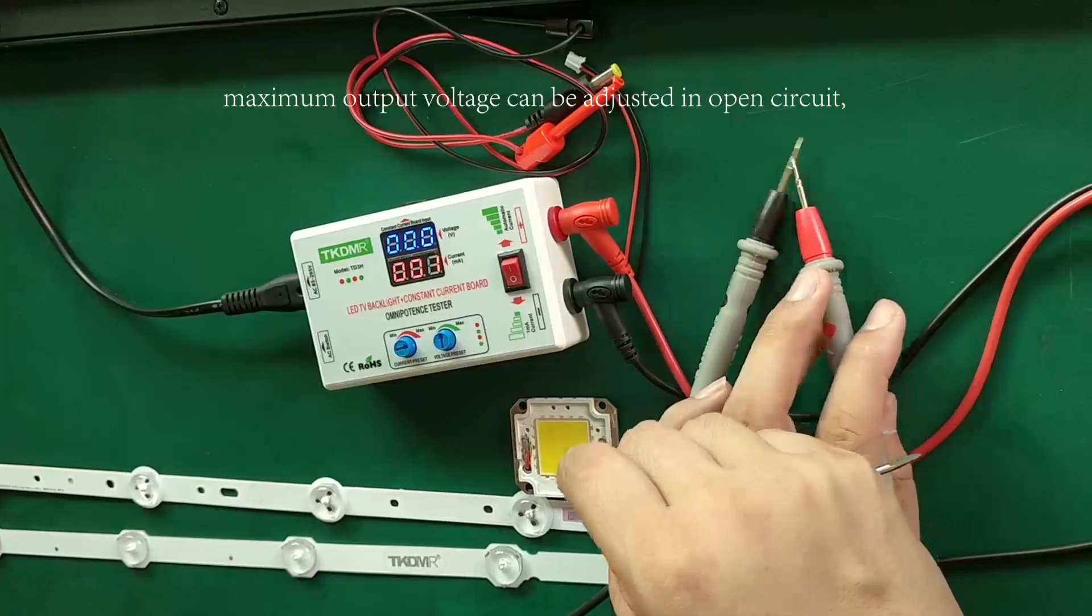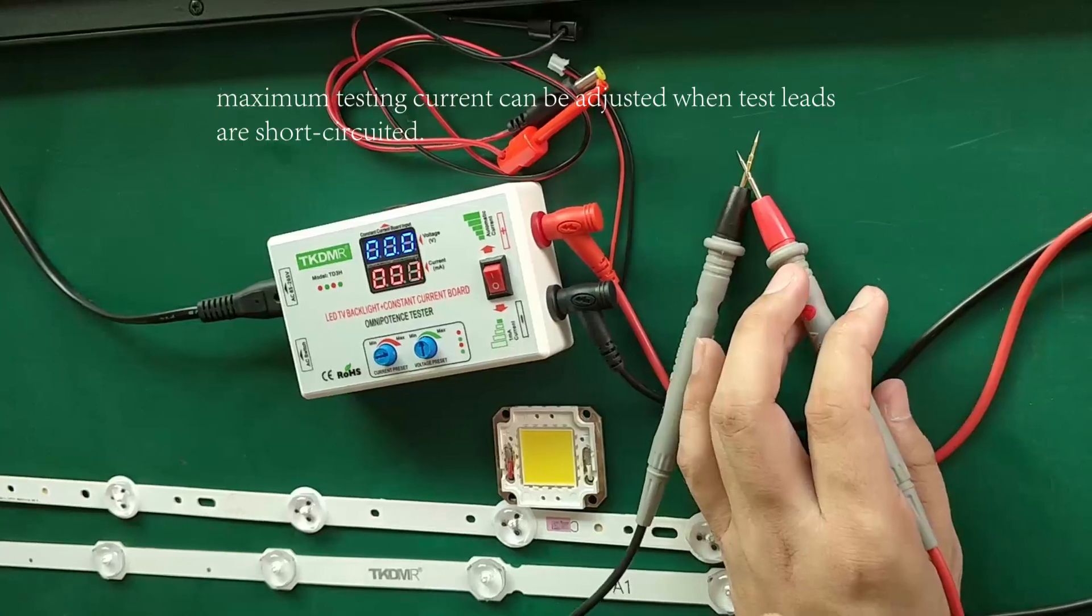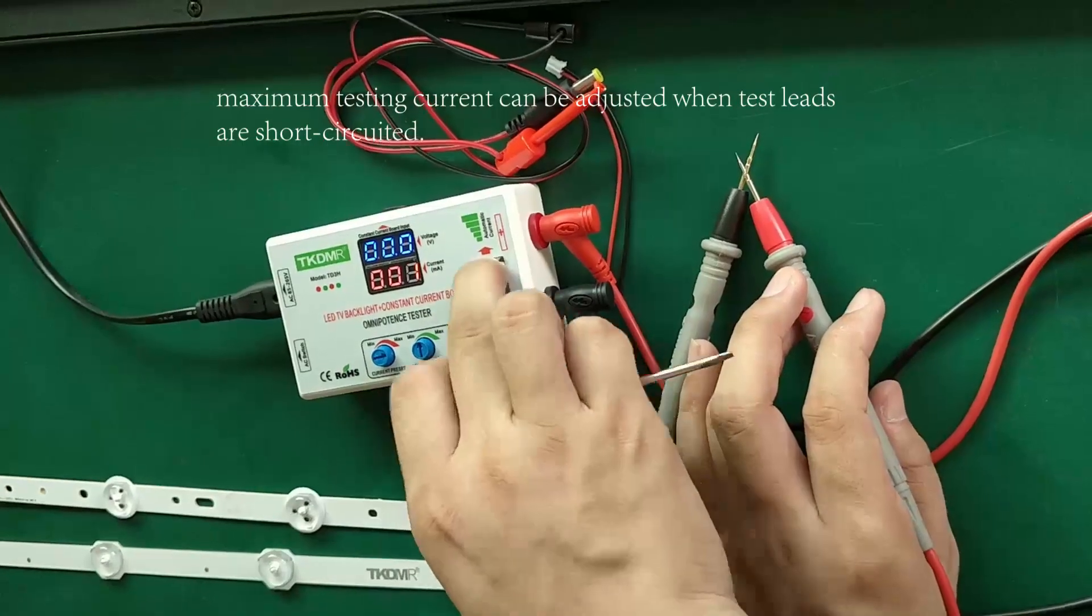Firstly, maximum output voltage can be adjusted in open circuit. And secondly, maximum testing current can be adjusted when test leads are short circuited.